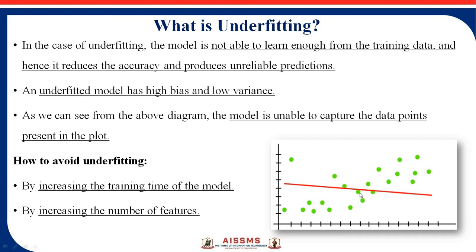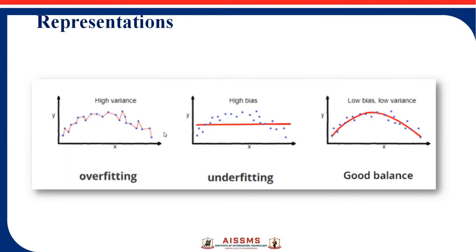Overfitting and underfitting are errors present in machine learning. To avoid underfitting, you need to increase the training time of the model or increase the number of features. If the machine is properly trained, these kinds of errors will not occur.